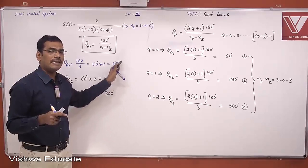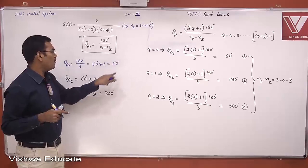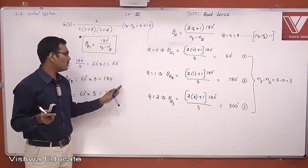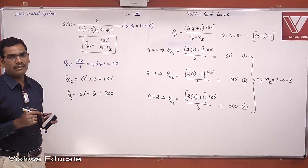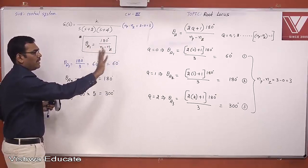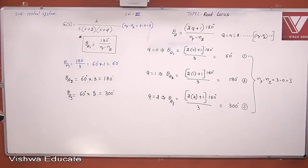All remaining angles of asymptotes are odd multiples of the first angle. But stop when you have reached the total number of asymptotes, which is Np − Nz. If there are 3 asymptotes, stop at 3; if 4, stop at 4; if 5, stop at 5. This is the shortcut procedure giving the same result as the general formula.